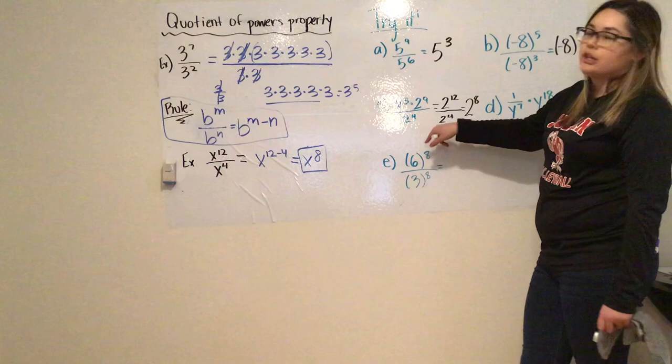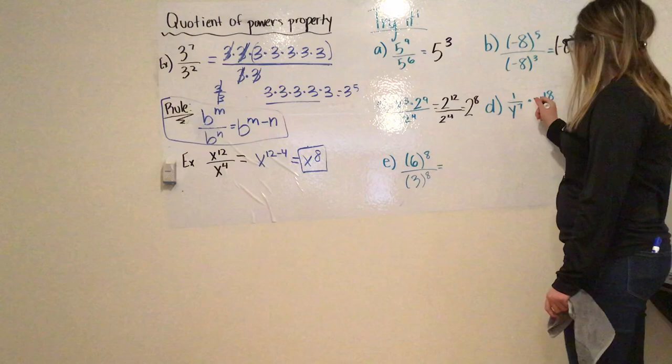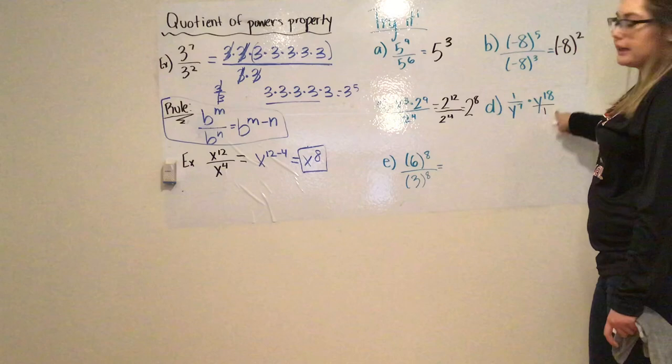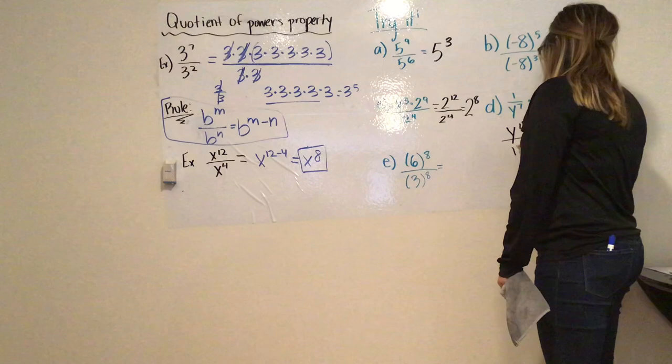So make sure you simplify before you divide. Then D: I have one over y to the seventh times y to the power of eighteen. It's just multiplying fractions because a whole number is really over one. So now I have y to the eighteenth over y to the seventh, which gives me y to the eleventh because I'm subtracting these two powers.